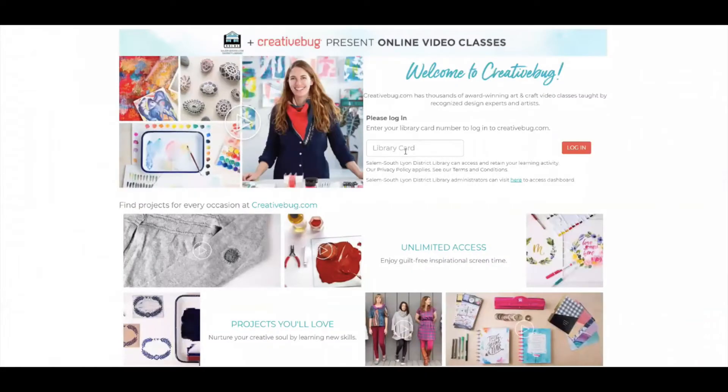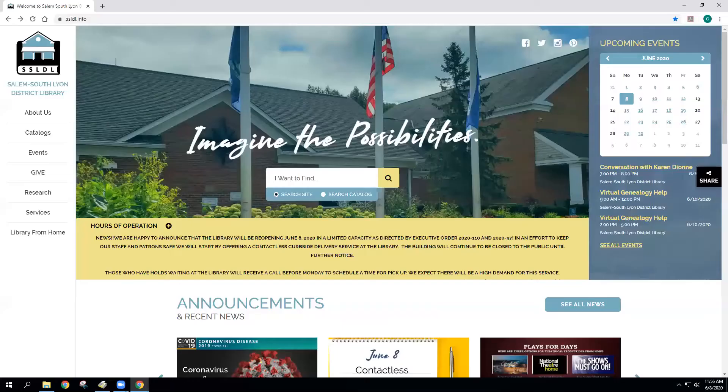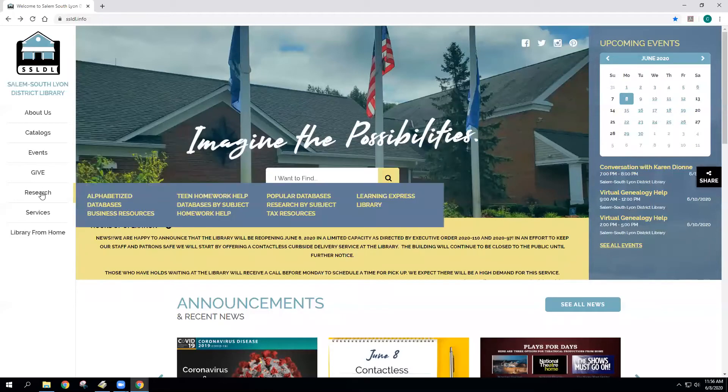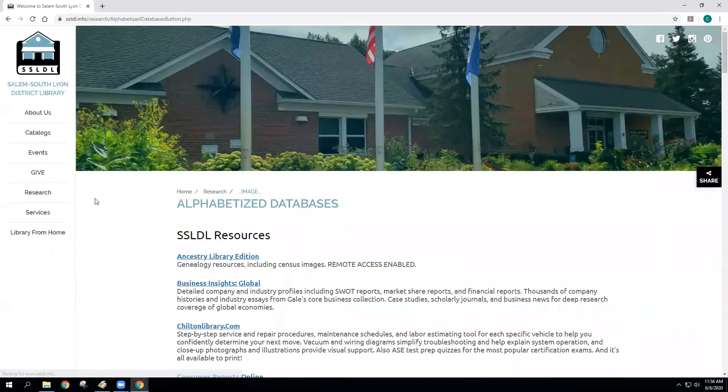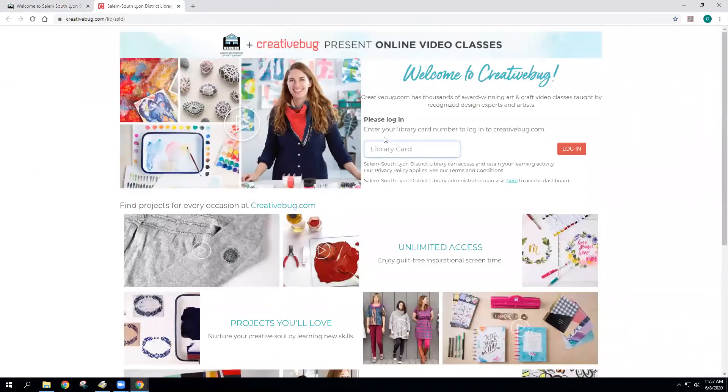Have you signed up for Creative Bug yet? You have free access with your library card! You can find it on the library's website ssldl.info. Go to Research and Alphabetize Databases and then scroll down to Creative Bug. Register using your library card number, create an account, and you'll be all ready to go!